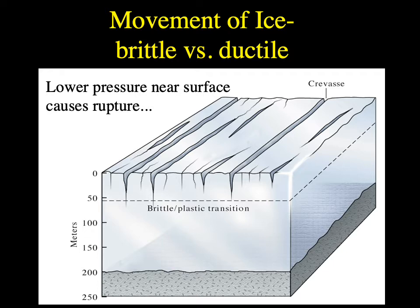The big cracks seen in glaciers and ice sheets are called crevasses. They form at the top of the glacier because there is low pressure at the surface, allowing the ice to crack open. Deeper down, the ice is under pressure and deformation is more ductile — meaning the ice flows in a plastic or smearing way rather than cracking brittlely.